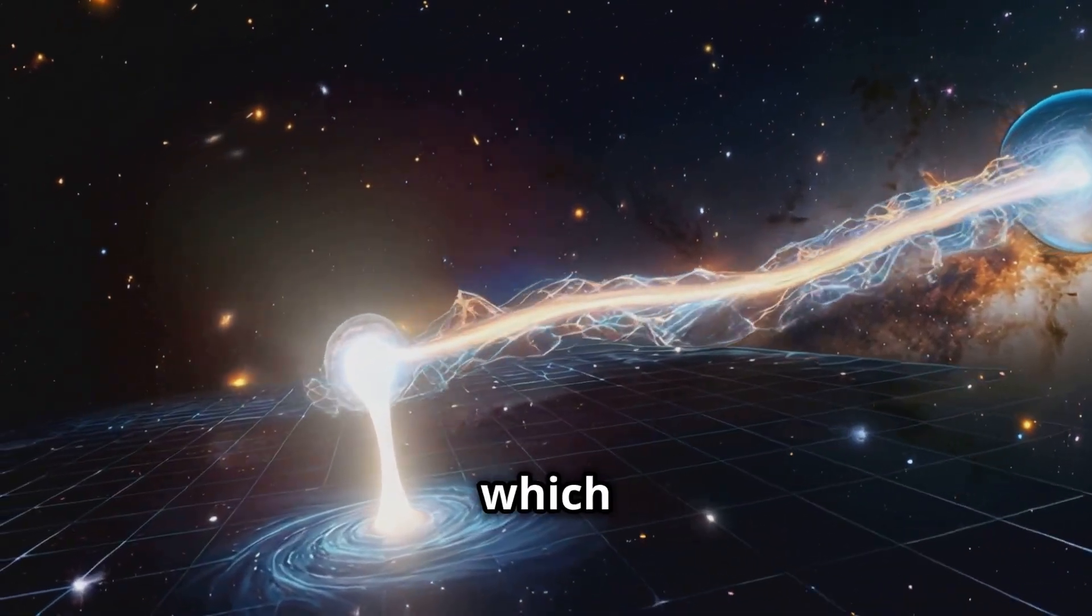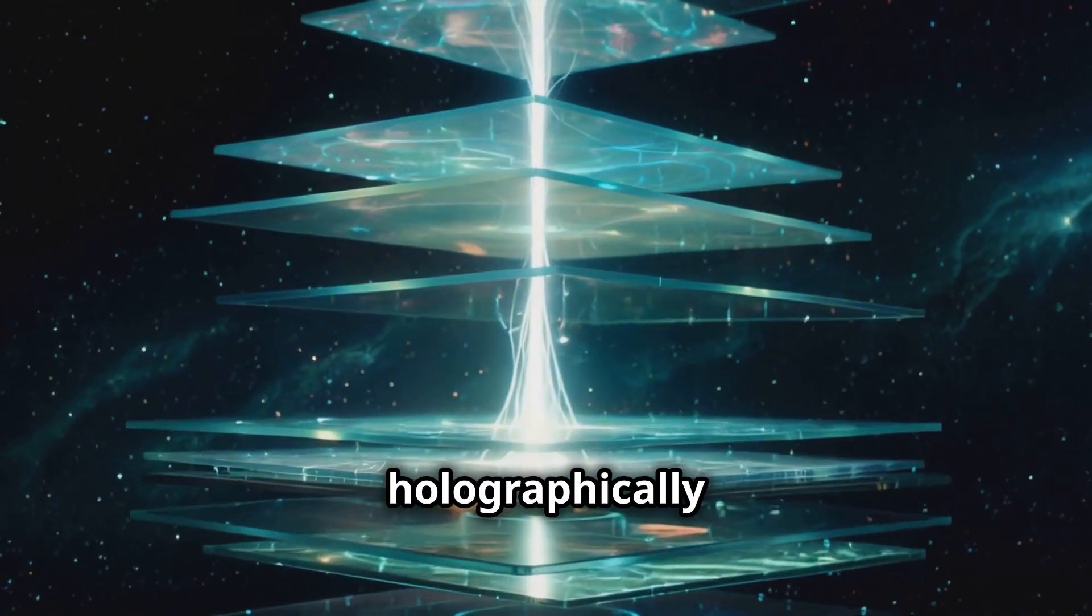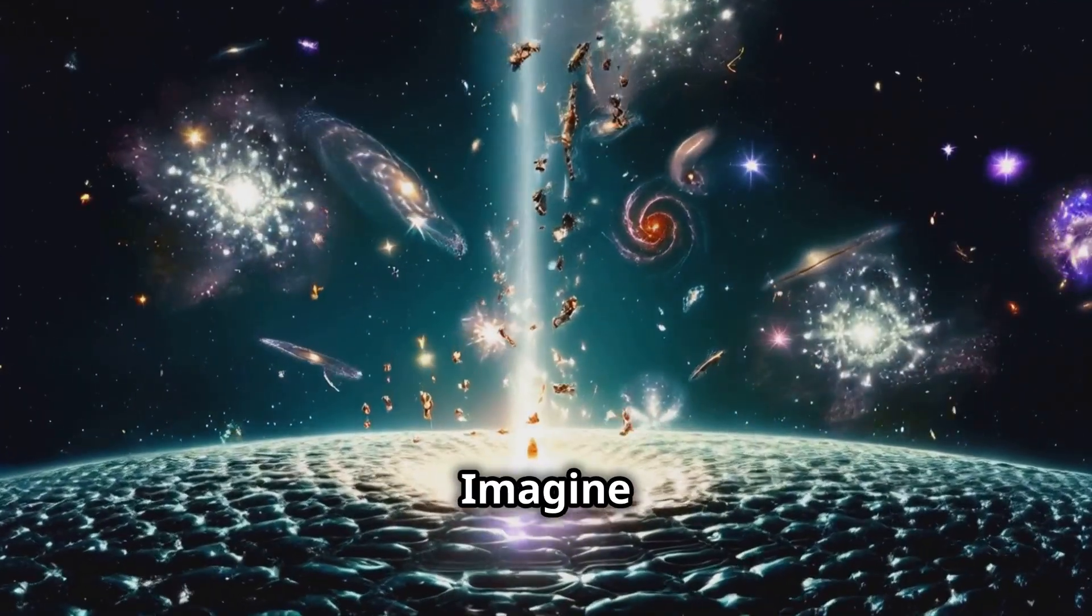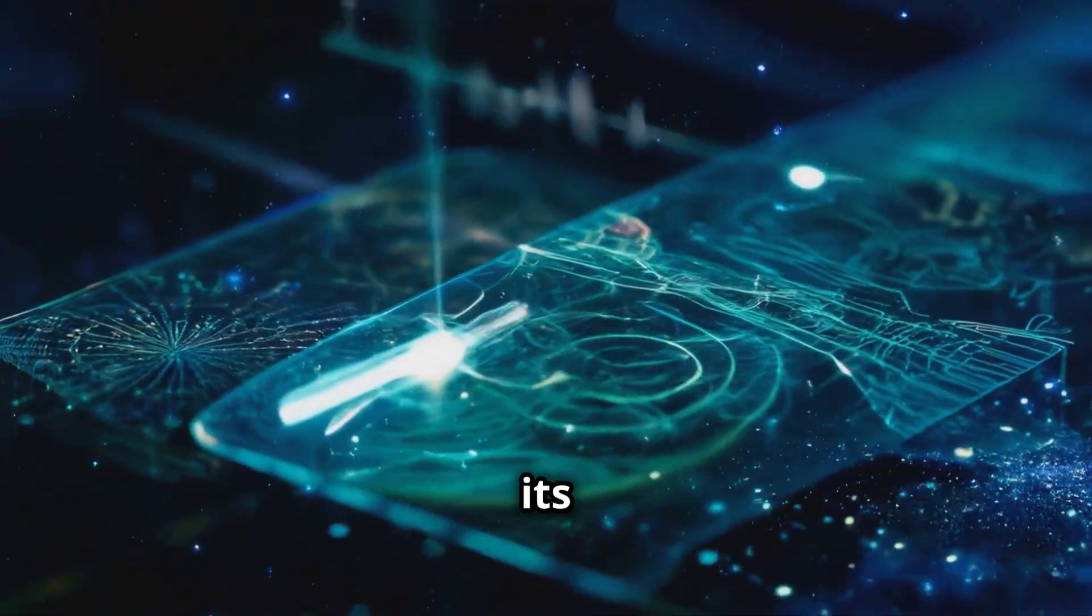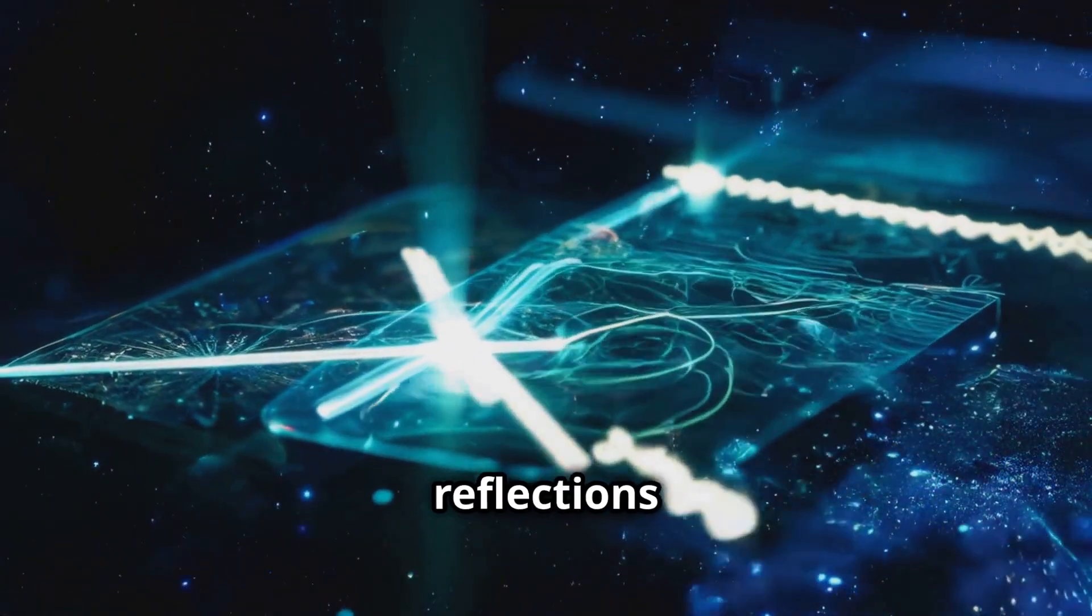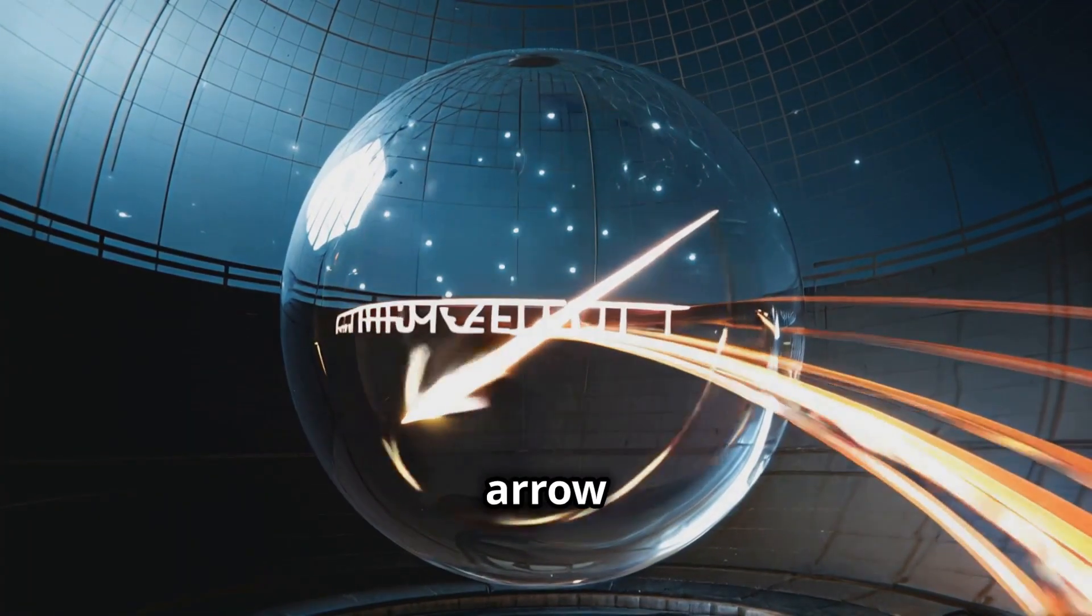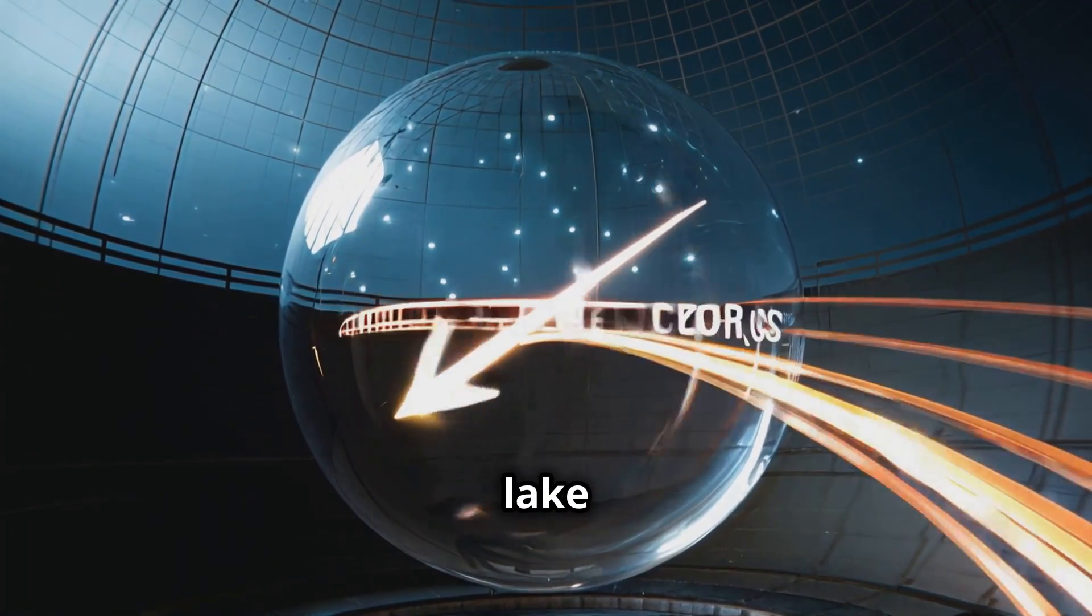became the canvas upon which all things were holographically projected. Imagine reality as a shimmering lake, its surface alive with ripples and reflections. Each ripple is a quantum state vector, an arrow of light spinning endlessly on the surface of the lake.